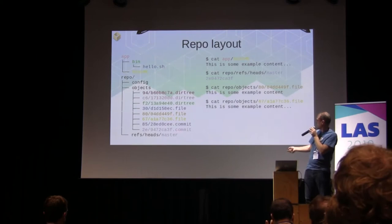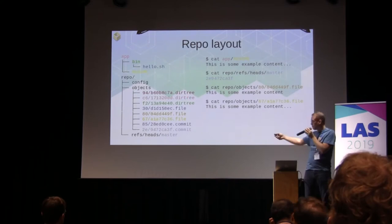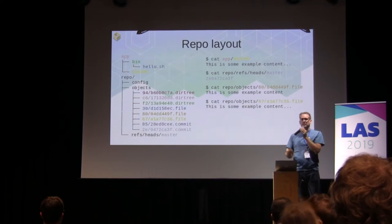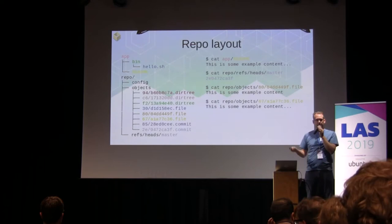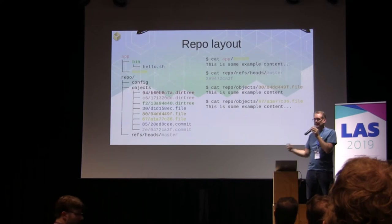The new commit object points to its parent, so there's a history. It also points to the new root, and the new root points to the new file, plus the old directory — the bin directory. So when you commit a new version where not a lot changed, you only add the changed files. It's a very efficient way to store things that changed, or even things that are unrelated but happen to have the same files — like two apps that happen to have the same Python version will automatically share those libraries.